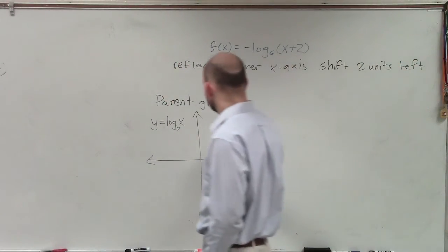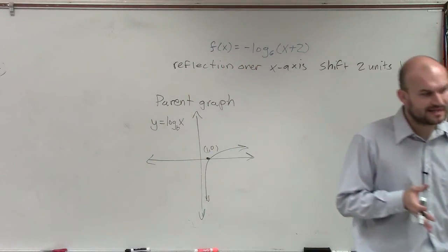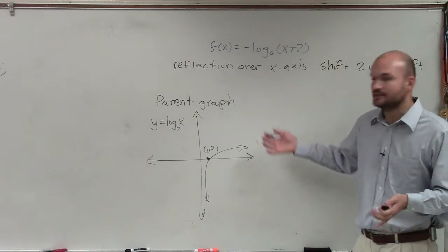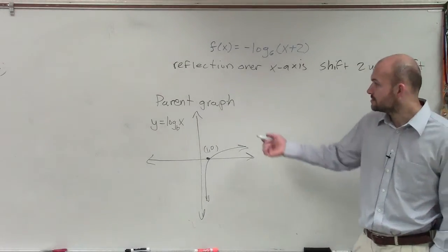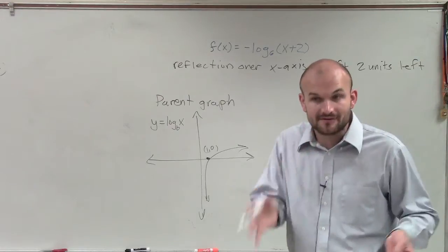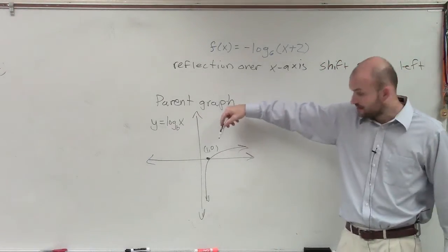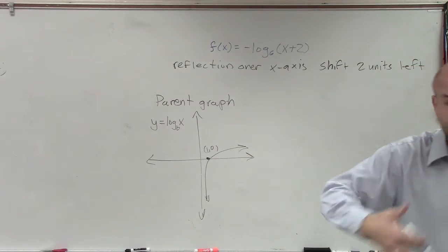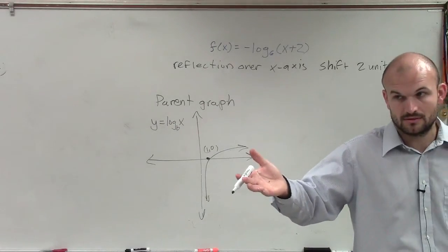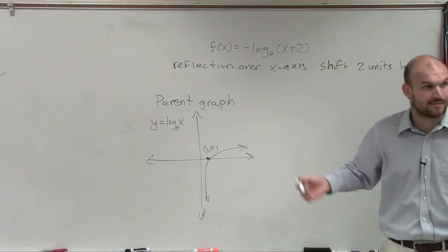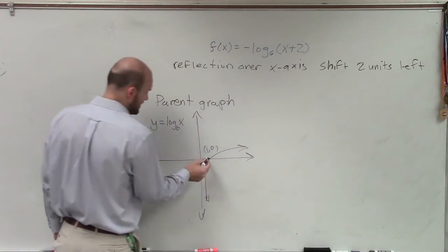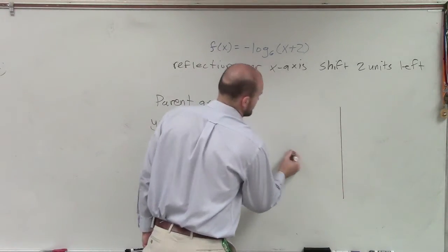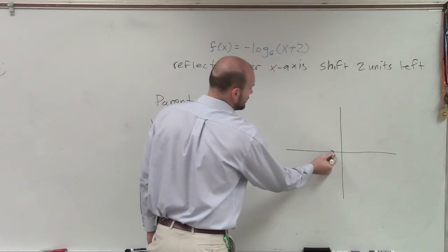And we know that the parent graph has the point 1 comma 0. So when I'm applying my transformations, what I'm going to do is I'm going to change how these transformations are going to affect my graph. So if this says to shift my graph 2 units to the left, I am going to take this graph, this point 1 comma 0, and shift it over 2 units to the left. So instead of being at the point 1 comma 0, it's now going to be at the point negative 1 comma 0. So all I'm doing is just moving this point 2 units to the left.